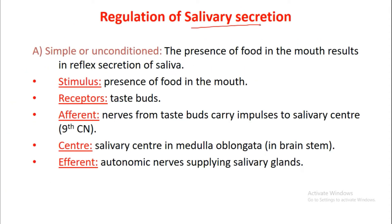Regulation of salivary secretion involves two reflexes: simple or unconditioned reflex and conditioned reflex. In the unconditioned reflex, the presence of food in the mouth is the stimulus. The receptors are the taste buds, and afferent nerves carry impulses to the salivary center via the ninth cranial nerve, the glossopharyngeal nerve. The salivary center is located in the medulla oblongata.